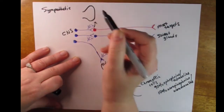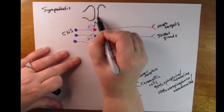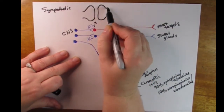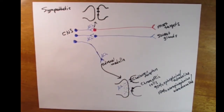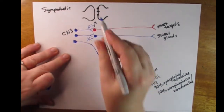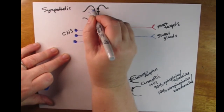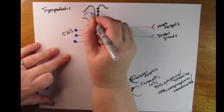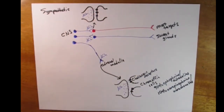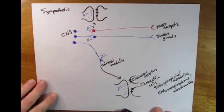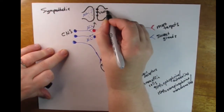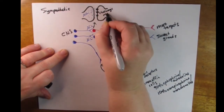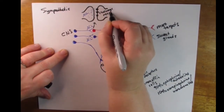Next, we have a cholinergic neuron interacting with an adrenergic neuron. Our preganglionic cell is cholinergic and our postganglionic cell is adrenergic. Are the receptors on the postganglionic cell cholinergic or adrenergic? They are, in fact, cholinergic, because they receive input from acetylcholine.